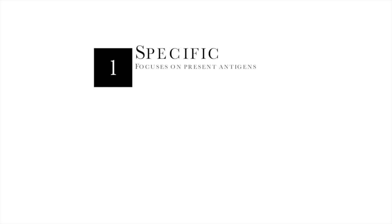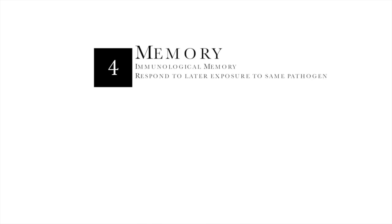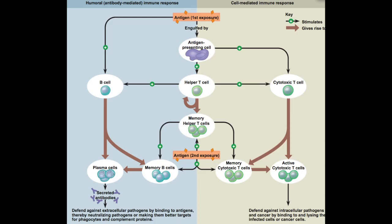Adaptive immunity has four key features. One, it is specific and focuses on antigens that are present. Two, it is diverse in response to a wide variety of pathogens by activating specific lymphocytes from a pool. Three, it has the ability to distinguish self from non-self. Four, it has immunological memory to respond to a later exposure to a pathogen. All of these features play a huge part in the primary and secondary responses.